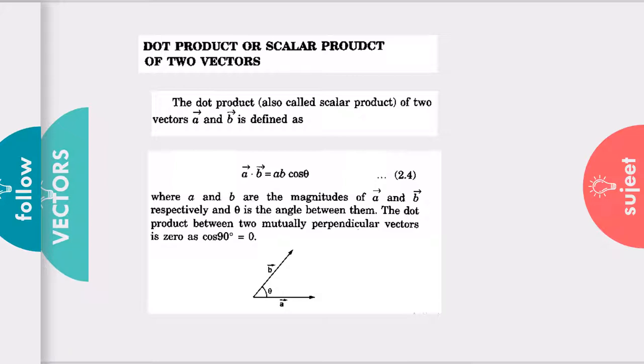First I am going to discuss dot product. Dot product by definition is vector a dot vector b, and it is equal to magnitude of a times magnitude of b times cosine of theta, where theta is the angle between vector a and vector b.